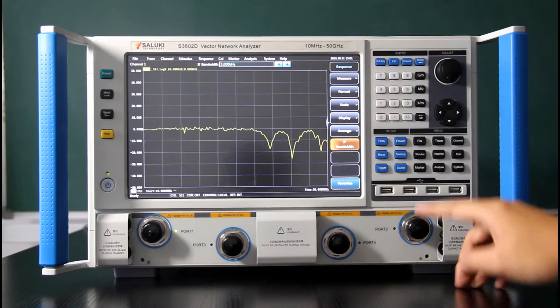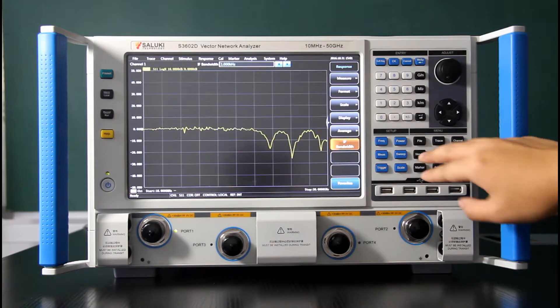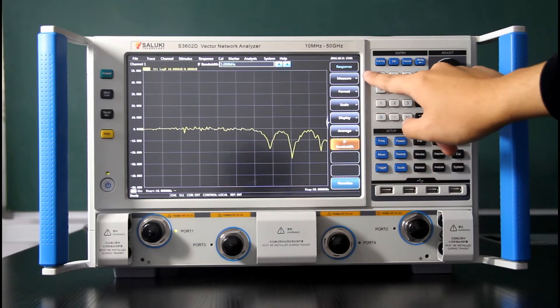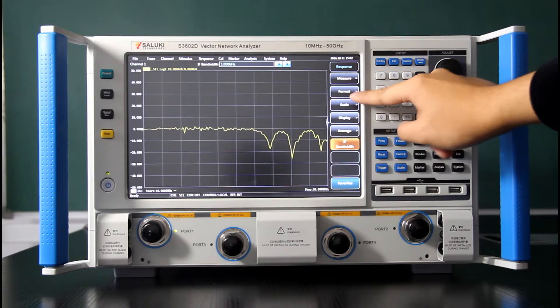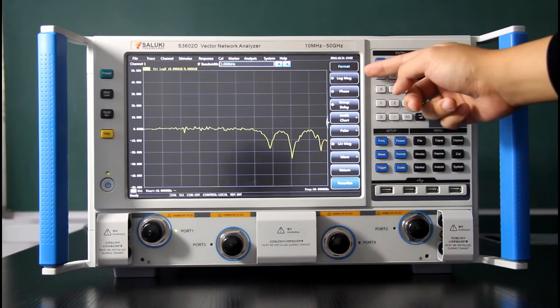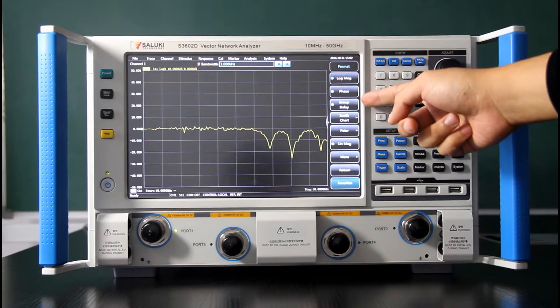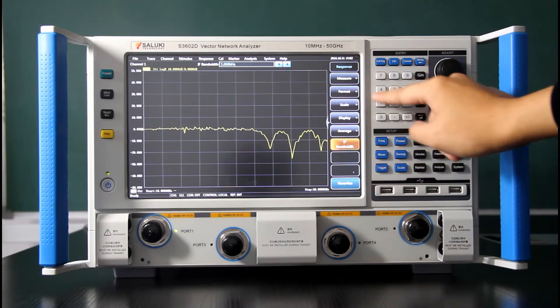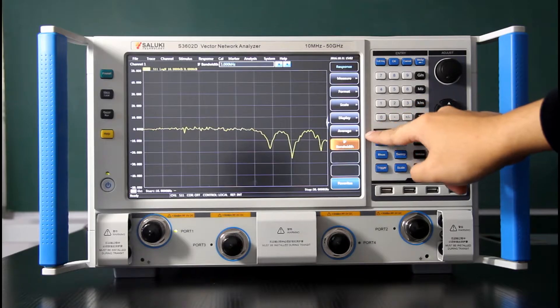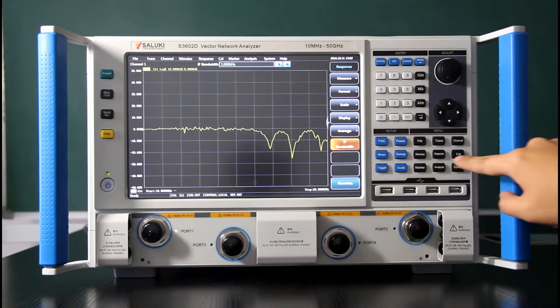And the response. Response will also include some function scene, like measure, scale, but it also covers some format. You can use a log mag, or phase, or group delay format here. Return. Then display, average, and IF bandwidth.